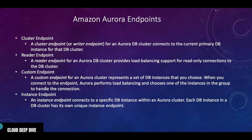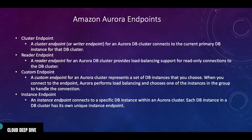Next we have custom endpoints. Both multi-master and single master support custom endpoints. A custom endpoint for an Amazon Aurora cluster represents a set of DB instances that you choose. When you connect to that custom endpoint, Aurora performs load balancing and chooses one of the instances in the group to handle the connection, returning the IP address of a different DB instance each time. These custom endpoints are useful to segregate traffic.